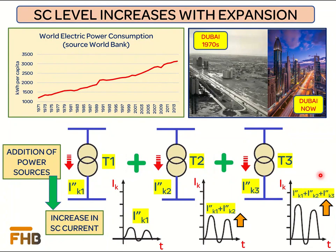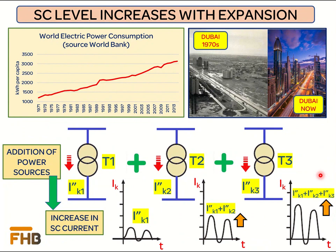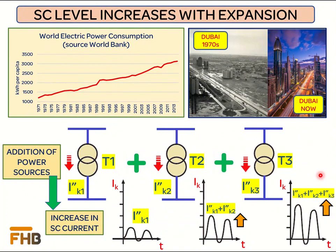Then what is the solution for the existing installed base to suit the new value of the short circuit current? The only possible solution is to limit the new value of short circuit current. For this purpose, different kinds of current limiting devices are installed in the power system, and in today's discussion we are going to study these current limiting devices.